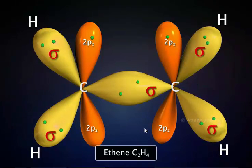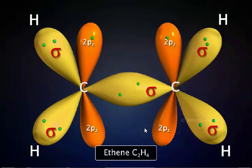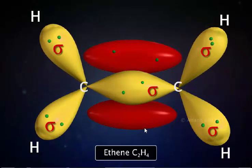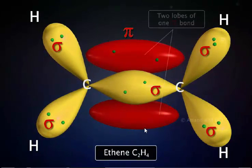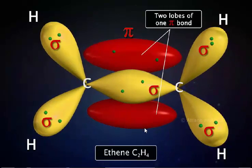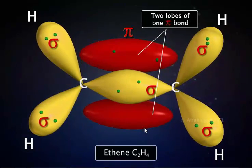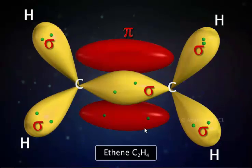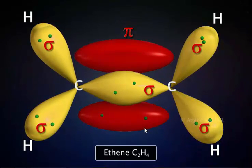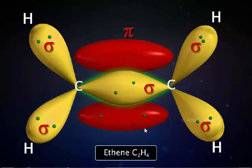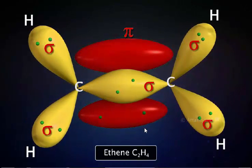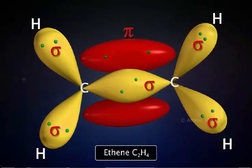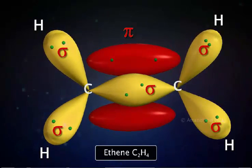Now let us observe the orbital overlap. The two pz orbitals can overlap side to side. This kind of covalent bond is called a pi bond. The electron density is concentrated above and below the plane of the nuclei of the bonding atoms. In a pi bond, the electrons are shared, and the two electrons are free to move through both regions of the bond. A double bond is thus composed of one sigma bond and one pi bond. Rotation does not occur about a double bond, because for rotation to occur along the carbon-carbon bond, the pi bond would have to be broken.